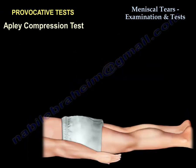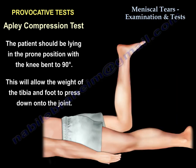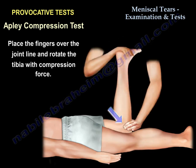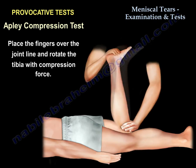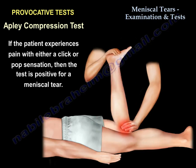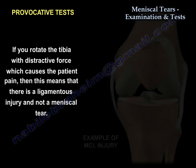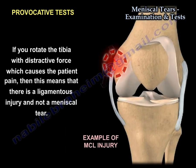The second test is the Apley Compression test. The patient is prone, bending the knee to 90 degrees. This will allow the weight of the tibia and the foot to press down on the joint. You're going to put your fingers over the joint line and rotate the tibia with a compression force. If the patient experiences pain with a click or a pop, then the test is positive for meniscal tear. The test is called the Apley Compression test because you need to apply compression. Now, if you rotate the tibia with a distraction force and the patient experiences pain, then it is a ligamentous injury and not a meniscal tear.